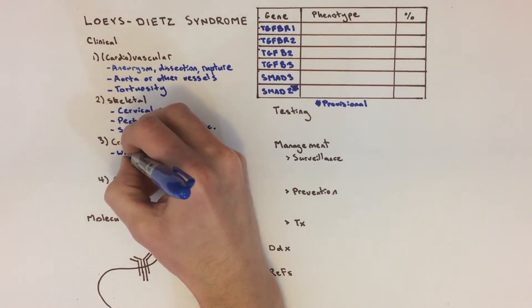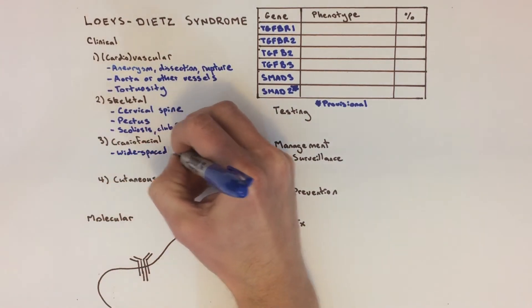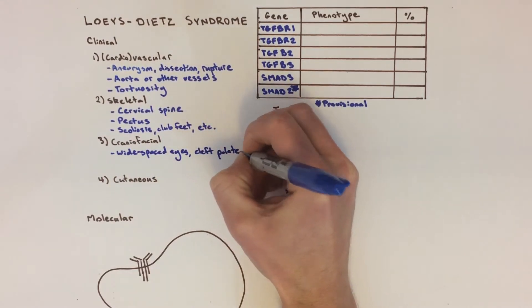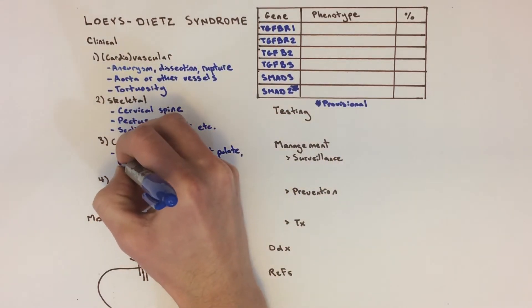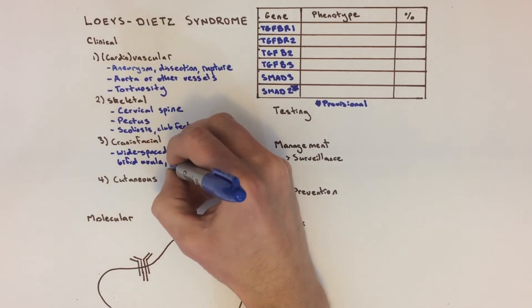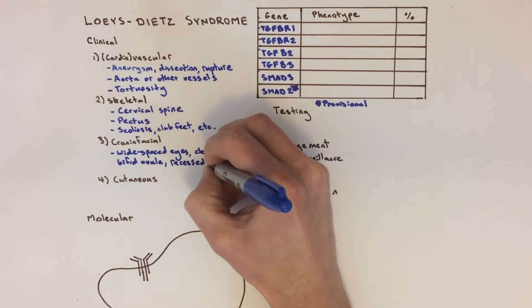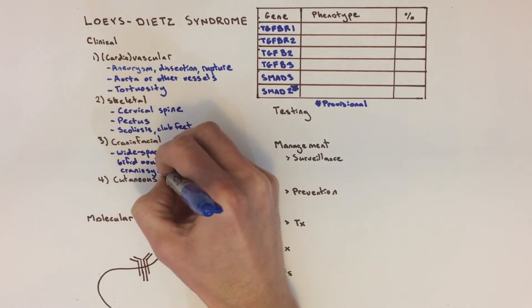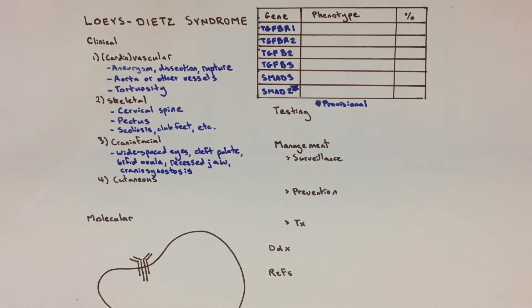The head and face of patients with Loeys-Dietz syndrome can have some unique features. These include wide-spaced eyes, a cleft palate, a bifid or two-lobed uvula, a recessed jaw, and craniosynostosis, meaning premature fusion of the sutures of the skull that can lead to abnormal head shape. Some patients, however, do not have any of these unique facial features.